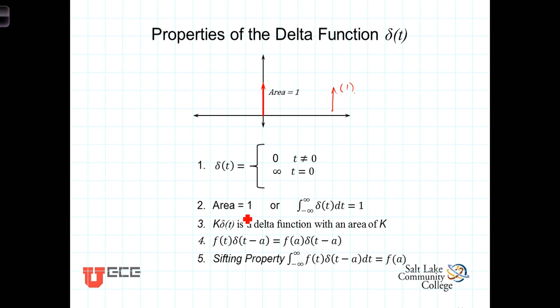It has an area of one. Now what does that mean? What that means is that if you were to integrate the delta function, the area under it or the value that you get is equal to one. So the integral from minus infinity to plus infinity of delta of t dt is equal to one. We can rewrite that because it only applies at the point of the delta function. And because it only exists at t equals zero, we can rewrite this as the integral from zero minus to zero plus delta of t dt equals one.